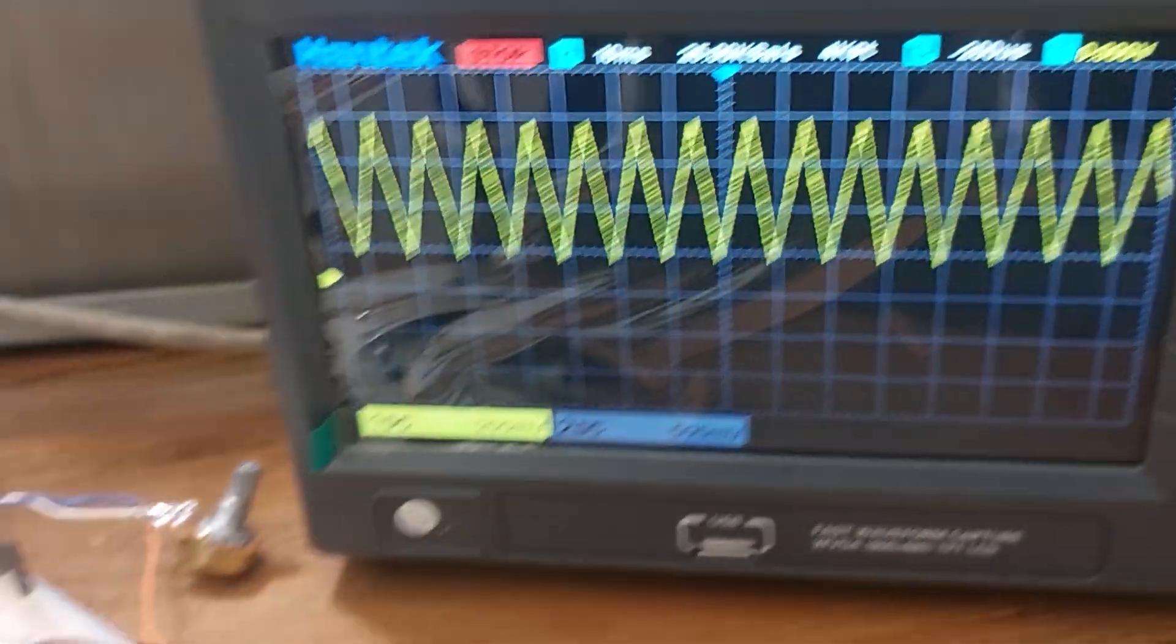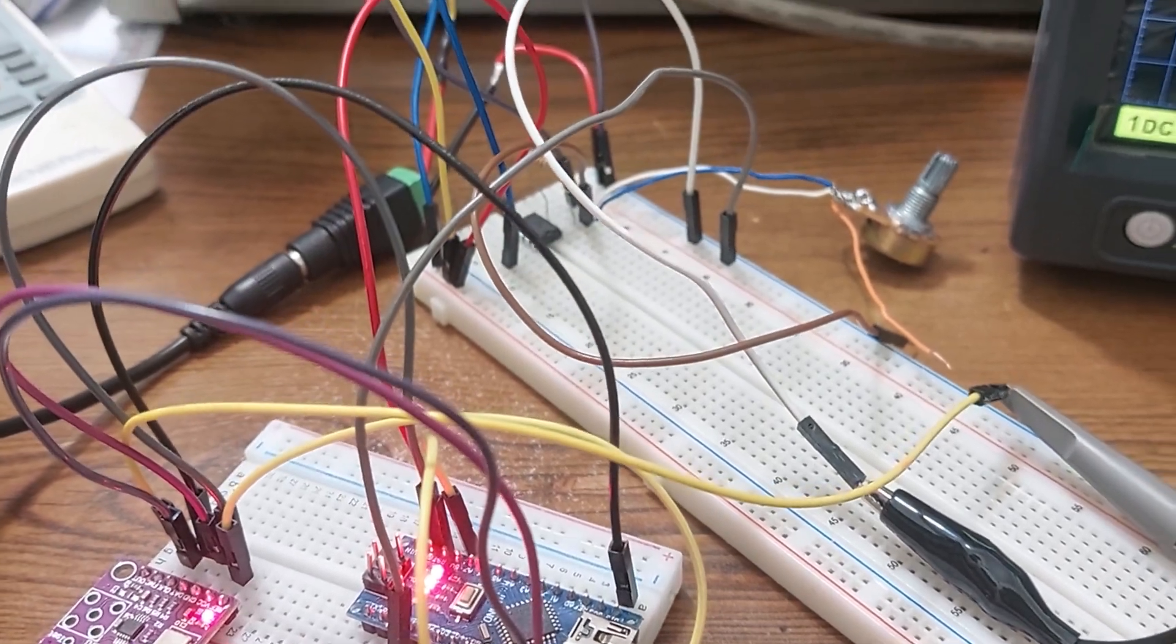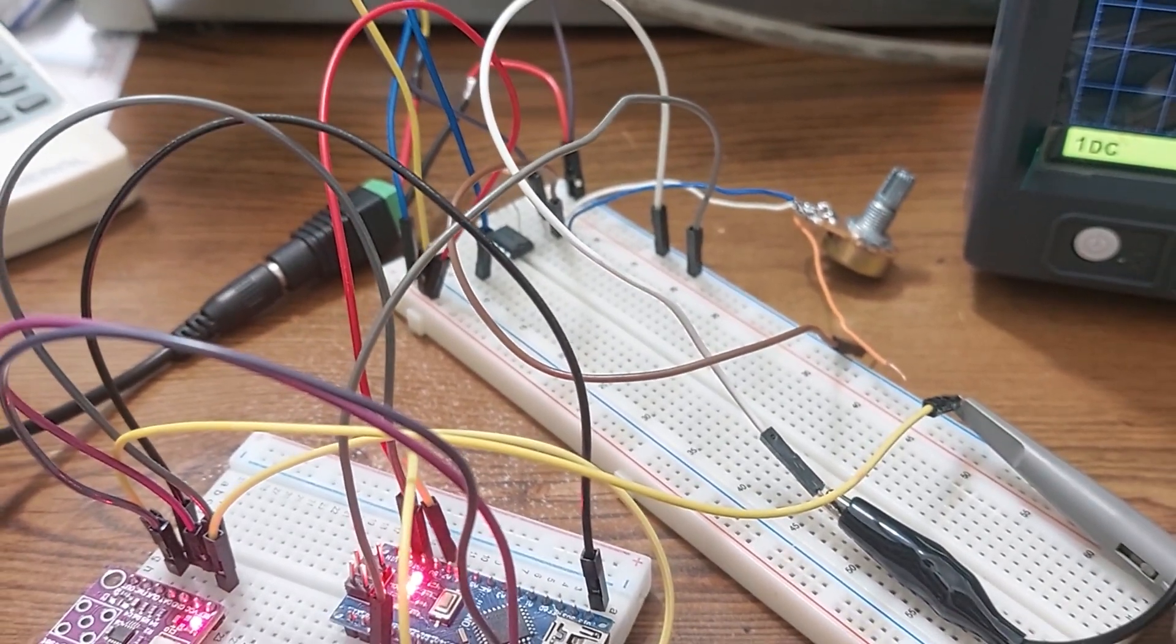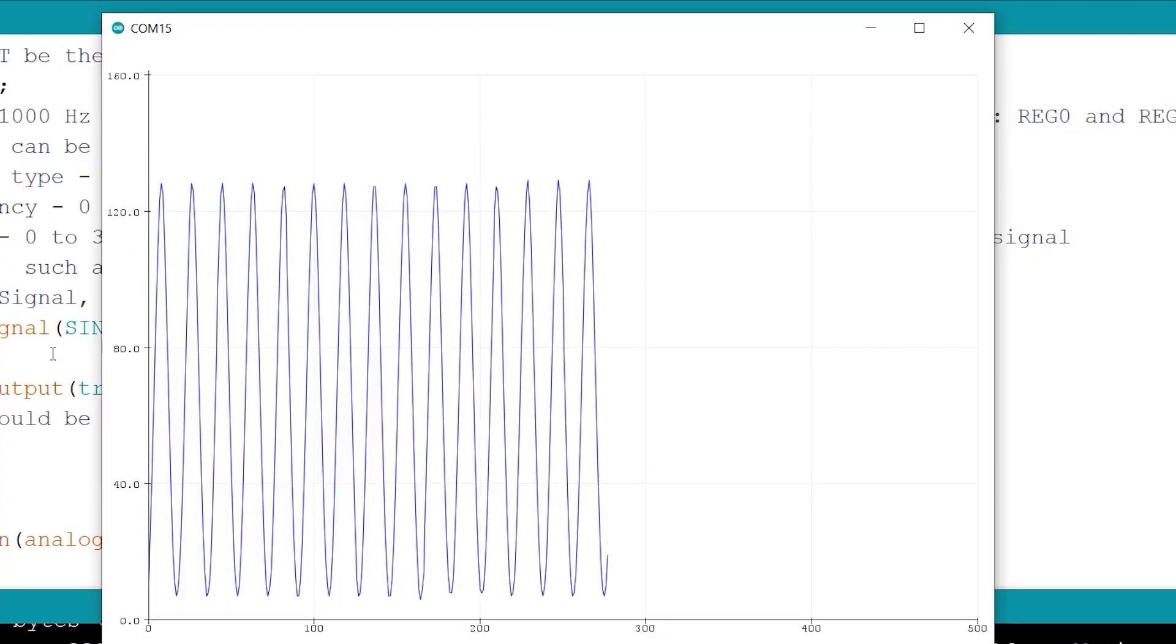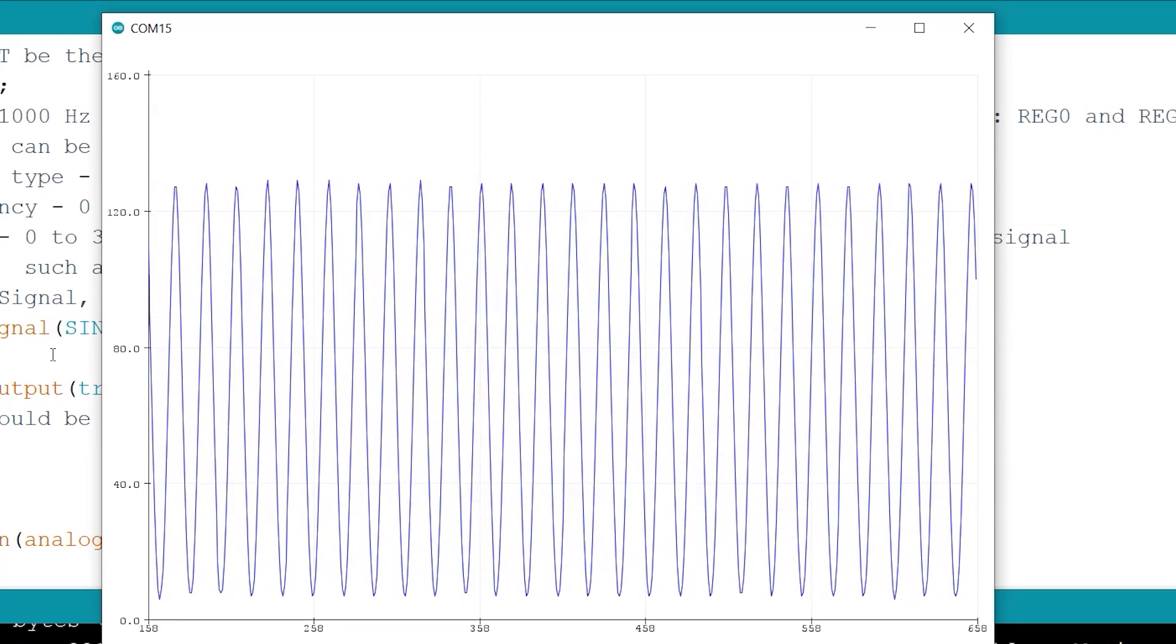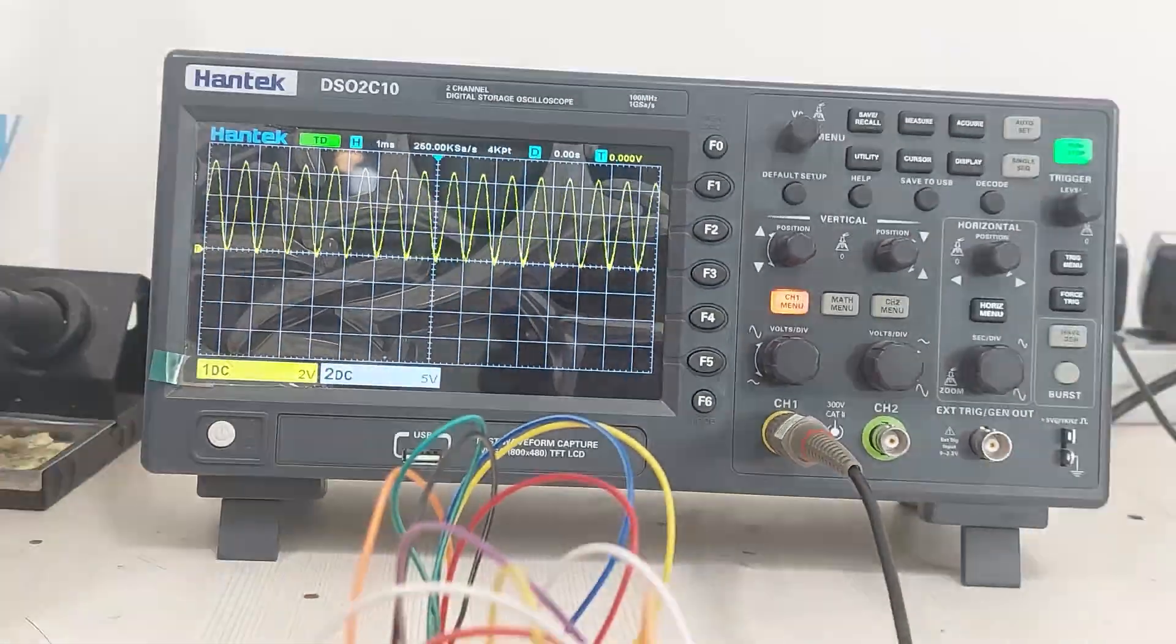The amplitude of the sine and triangle waves are quite low, around 600 mW peak to peak. And there is another problem - the output signal is mixed with a bit of DC offset.